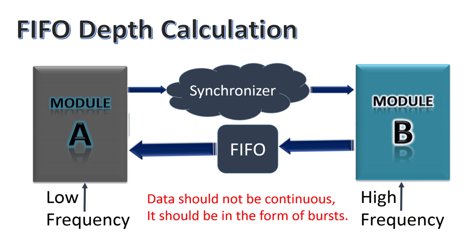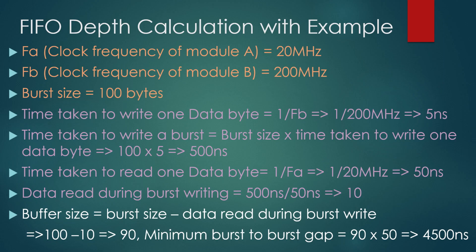Moreover, there should be a minimum burst-to-burst gap so that module A gets sufficient time to read the complete FIFO. Now the next question is: what should be the depth of the FIFO? Let us understand by taking an example. Suppose module A is working at clock frequency FA = 20 MHz and module B is working at frequency FB = 200 MHz, and data is transferred in the form of bursts.